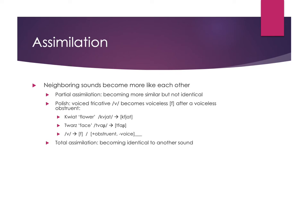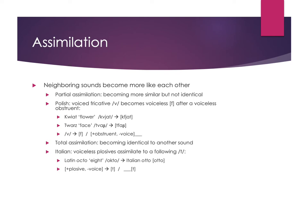You can also have total assimilation, where sounds become exactly identical to each other, taking on all the features of whatever sound they're next to. An example is in Italian, where voiceless plosives assimilate to a following T sound — whatever voiceless plosive it is becomes another T, giving you two T's next to each other. Going from Latin to Italian, the word for 'eight' in Latin, 'octo', became Italian 'otto', with a double consonant T held twice as long, becoming completely identical to the following sound.